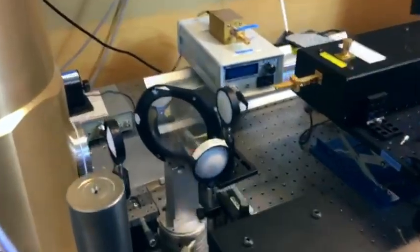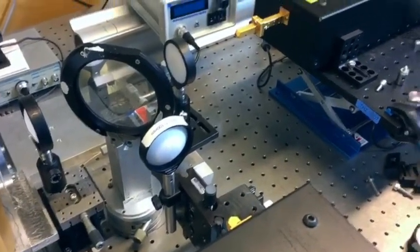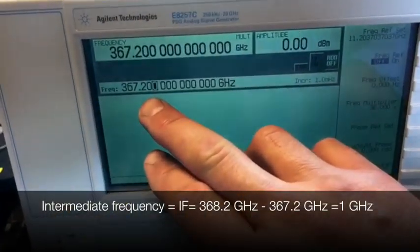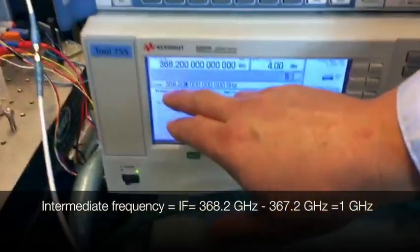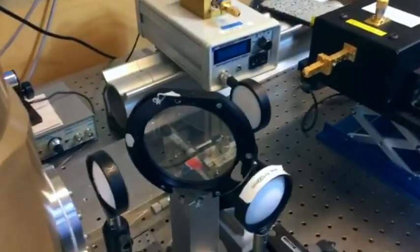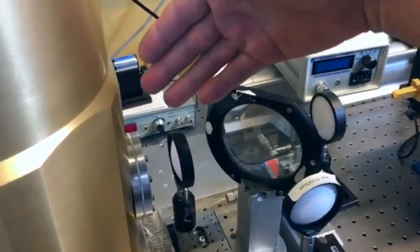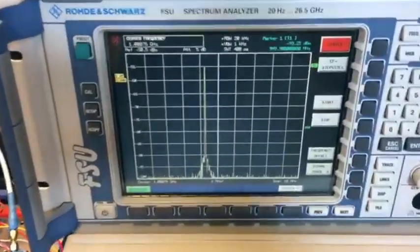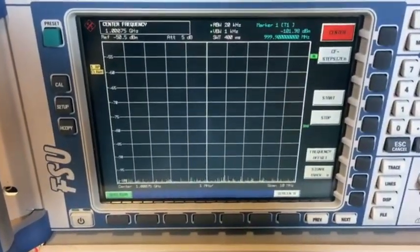We have two waves emitting at 367.2 GHz and 368.2 GHz. After being blended in the beam splitter and mixed in the graphene mixer, we obtain the intermediate frequency through this cable. On the screen, we observe a peak which will disappear if we switch off one of the sources.